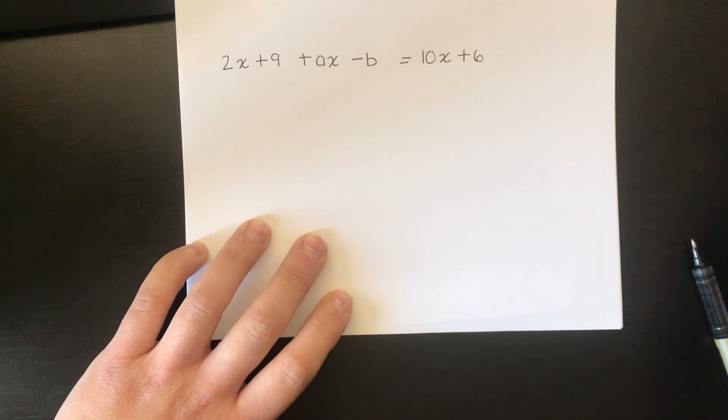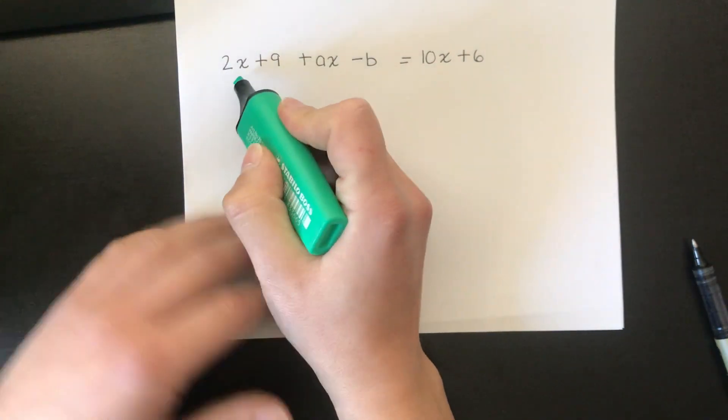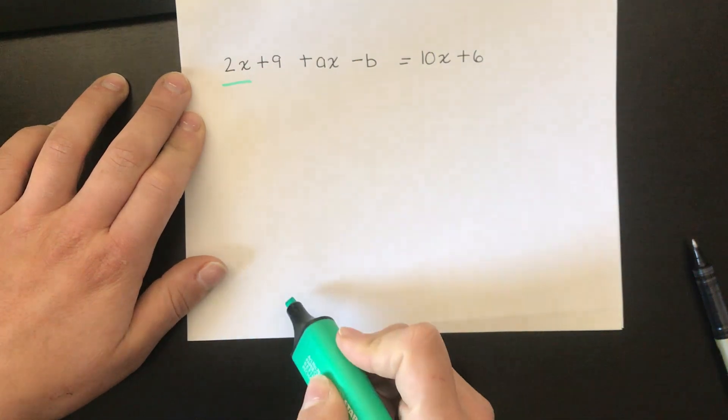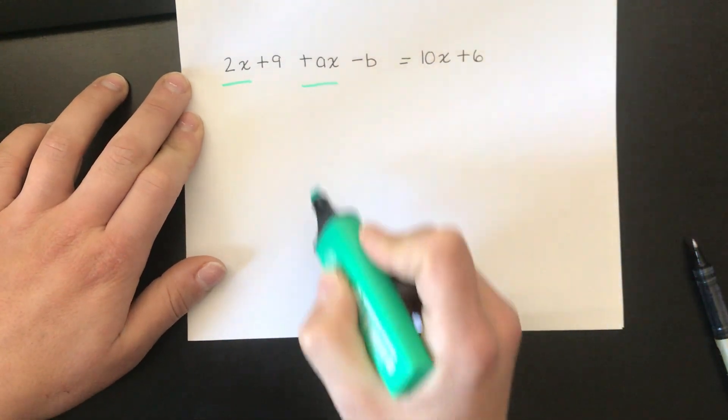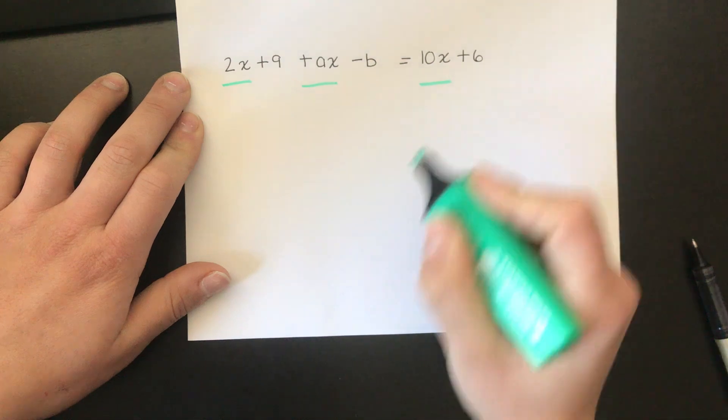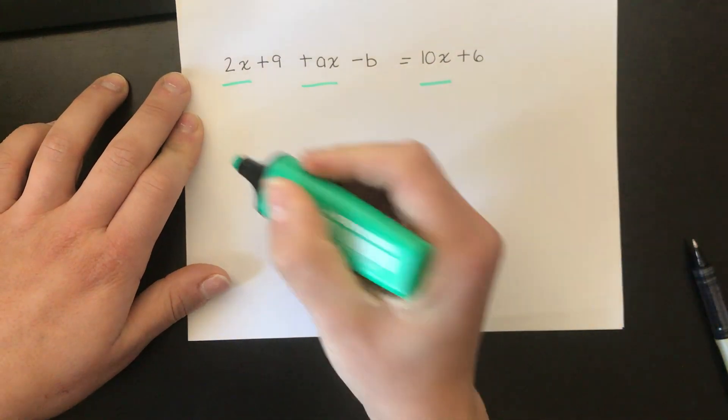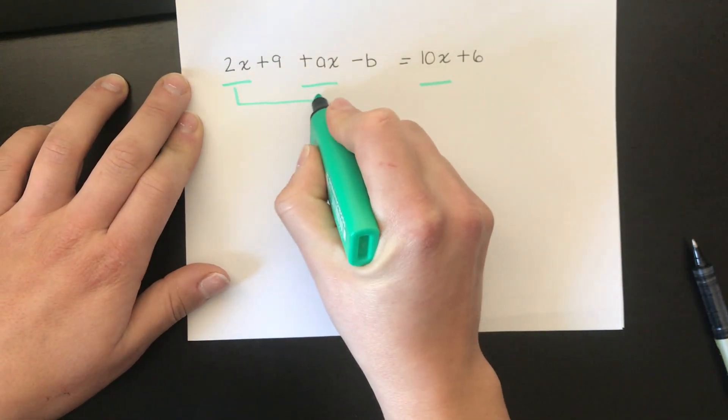I'm going to highlight the things that are the same. I've got 2x over here plus ax, and those two things are going to be equal to 10x. So these three things all have to be the same.